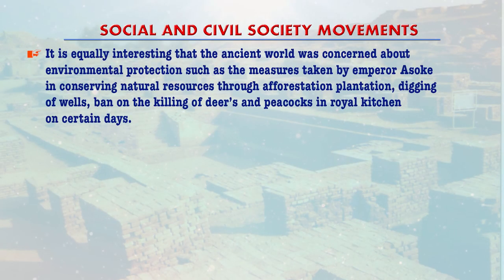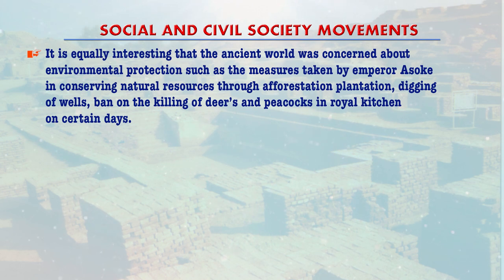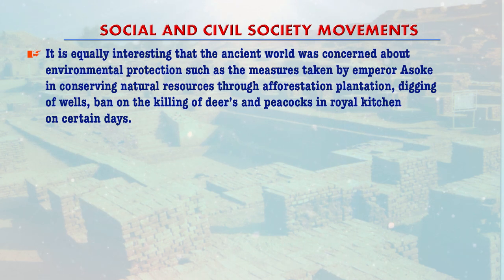It is equally interesting that the ancient world was concerned about environmental protection. Emperor Ashoka of the Mauryan Empire took measures for conserving natural resources through afforestation, plantation, digging of wells, and a ban on the killing of deer and peacocks in royal kitchens on certain days. We have a series of major rock edicts and pillar edicts — inscriptions of Emperor Ashoka Maurya written in Brahmi script and Prakrit language.